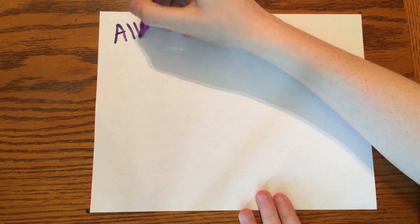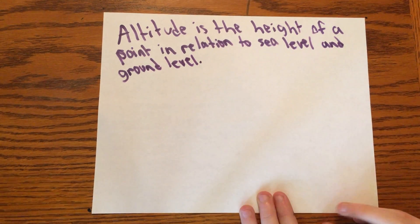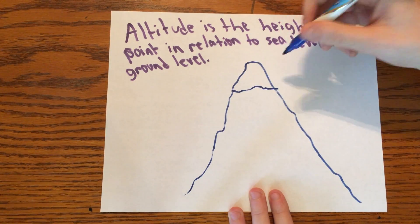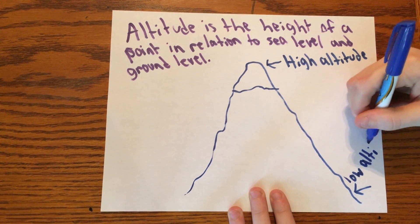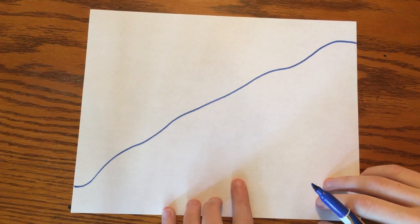Next, let's move on to altitude. Altitude is the height of a point in relation to sea level and ground level. For every 1,000 foot rise in altitude, there is a 4 degree Fahrenheit drop in temperature.